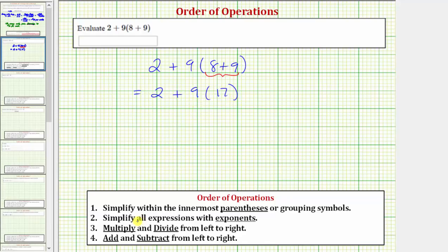Referring back to our notes, we can actually skip step two where it says simplify all expressions with exponents. But because we don't have any exponents, we skip this step and go to step three.